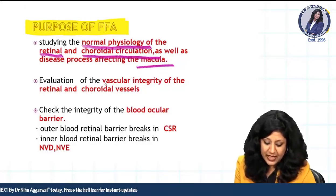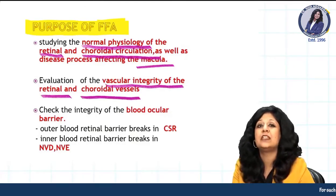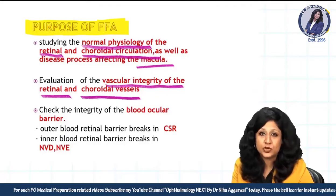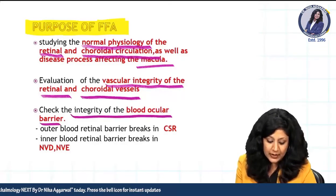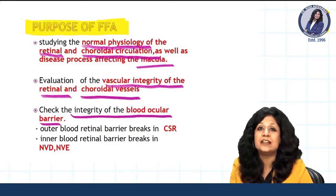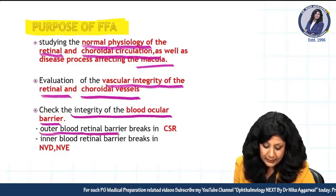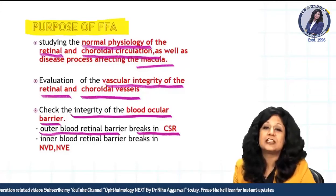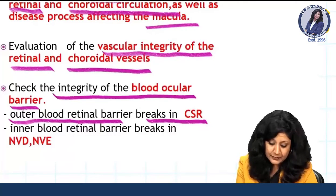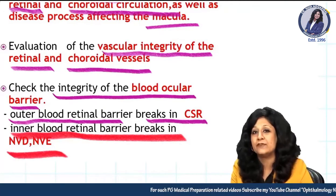The second purpose is evaluation of the integrity of the retinal and choroidal vessels — to see if there is some abnormality or if integrity is maintained. Number three, to check the integrity of the blood-ocular barrier. If this barrier is broken, you will get certain abnormalities on the angiography. For example, the outer blood-retinal barrier is interrupted in cases of CSR — central serous retinopathy — while the inner blood-retinal barrier is interrupted in cases of neovascularization, that is NVD and NVE.